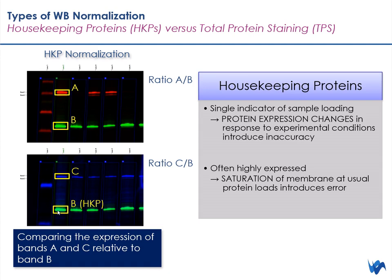The downfall of using housekeeping proteins as your normalization standard is that you are using a single indicator for sample loading. Many studies have shown that the expression of housekeeping proteins can actually be affected by experimental treatments or changes in experimental conditions, which can negatively affect your ability to accurately normalize. Another downside is that housekeeping proteins are generally highly expressed, and this high expression can saturate your membrane or quickly saturate the signal, especially when comparing to a protein with lower expression.